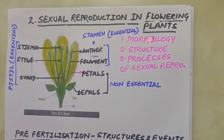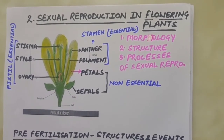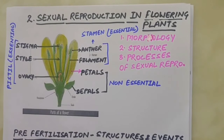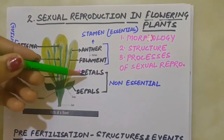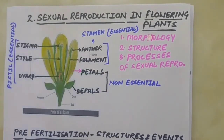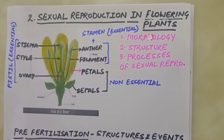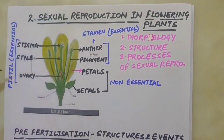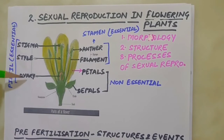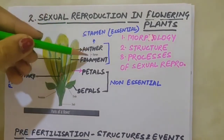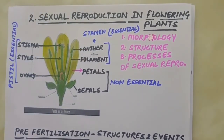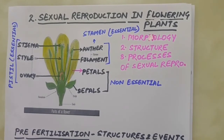As we are talking about flowering plants, let's have a look at the structure of the flower first. Petals and sepals are called non-essential parts of the flower. It does not mean they are not essential, but they are not directly involved in reproduction. The essential parts are pistil and stamen. Pistil consists of stigma, style and ovary, and stamen consists of anther and filament. They are called essential parts because they are directly involved in reproduction.